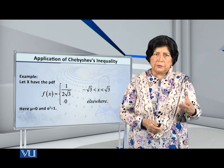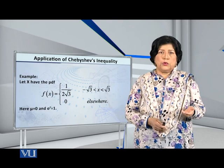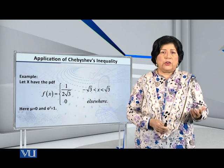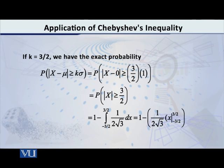We have the conditions by which we can apply Chebyshev's inequality — that the mean and variance are finite quantities and do not fail to exist. Now suppose we put k equal to 3/2, which can be any positive real number. So let us choose it as 3/2, or 1.5. If I insert the values of mu, sigma, and k in the left-hand side of Chebyshev's inequality and try to compute that probability to get the exact probability for that interval, what will I have?